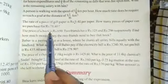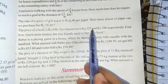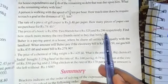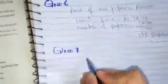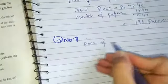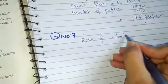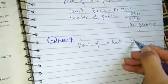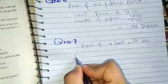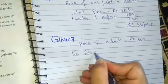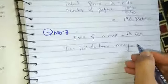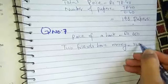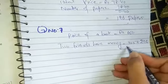Now our question number 7: the price of a book is 650 rupees. Two friends have 325 and 296 rupees respectively. Find how much more money the two friends need to buy the book. The price of a book is 650. Two friends have money 325 plus 296 rupees, that becomes 621.